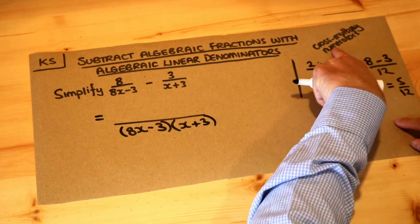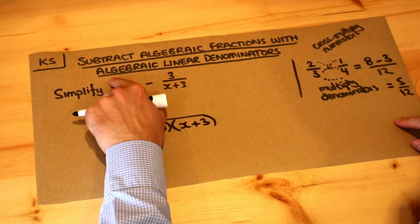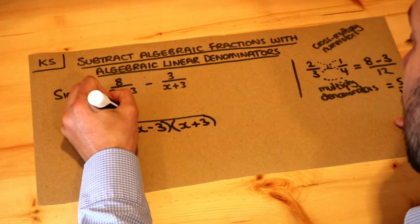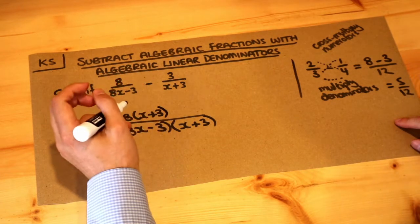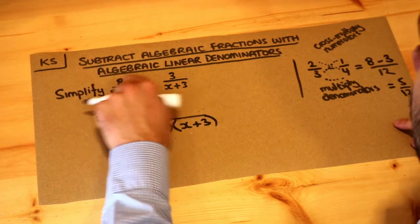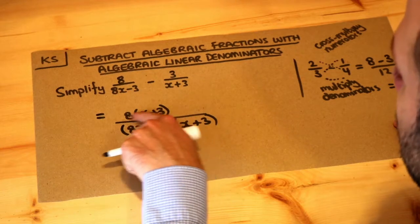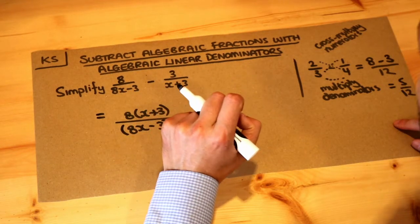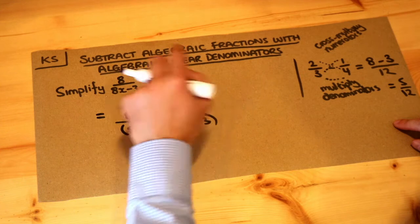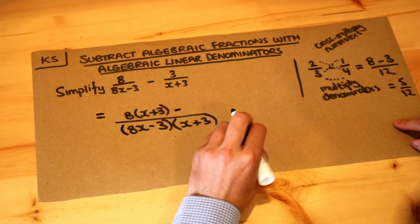And then we're going to cross multiply the numerators. So the eight is going to get multiplied by the (x + 3). And my advice is don't try to do too much at once. You could sort of expand that out at the same time when you write this, but you'll likely make a mistake when you do the subtraction and make some sign errors. So I wouldn't do it all in one go.